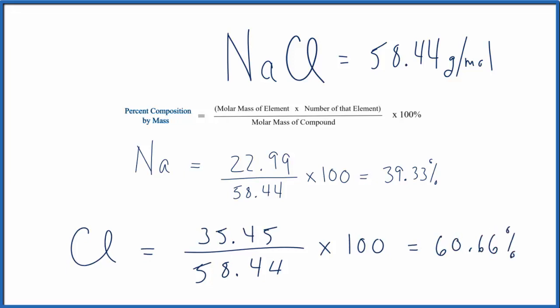You might note if we add up this chlorine, the 60.66, plus the 39.33, we get 99.99, and that's okay. That's because of the way that the periodic table I use rounded. You should be very close to 100%, though.